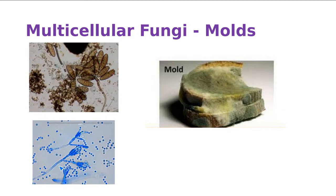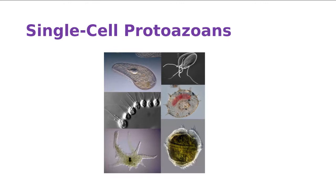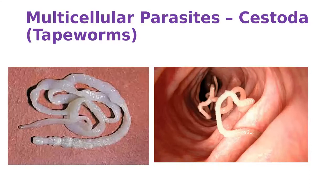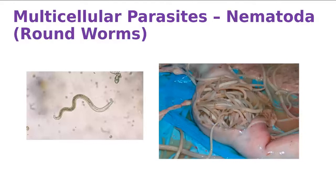Now I want to talk about what we're covering today and in the future. We're going to look at single-cell protozoans and multicellular organisms — more fascinating because you can see them with the naked eye. We'll cover the trematoda, which are the flukes; the cestoda, which are the tapeworms; and the nematoda, which are the only true worms. Here you can see thousands of roundworms in a person's small intestines, causing an impaction and all kinds of medical problems.